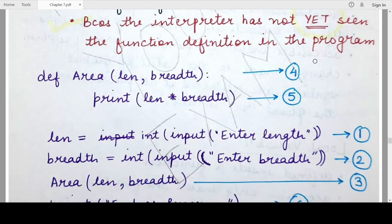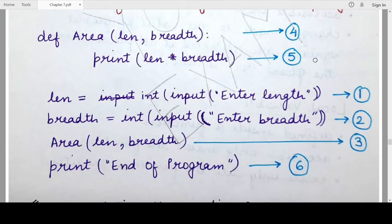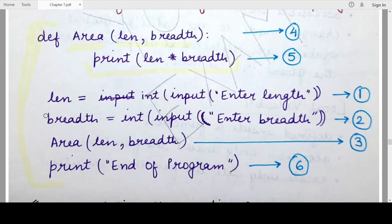Let's see another example and see how control transfers when there are different statements, function calls, and function definitions inside a program. In this program, in the first statement I have defined a function. The function takes two parameters, length and breadth, and prints the area of the rectangle, which is length multiplied by breadth. Outside the function is a statement that accepts the length and breadth of the rectangle from the user. When you execute this program, the function definition is encountered first by the Python interpreter, but this will not produce any output on the screen because the function definition is only executed when a function call is encountered.